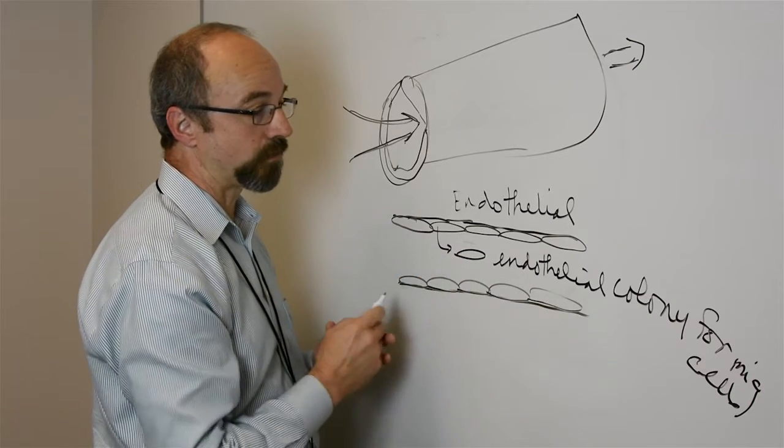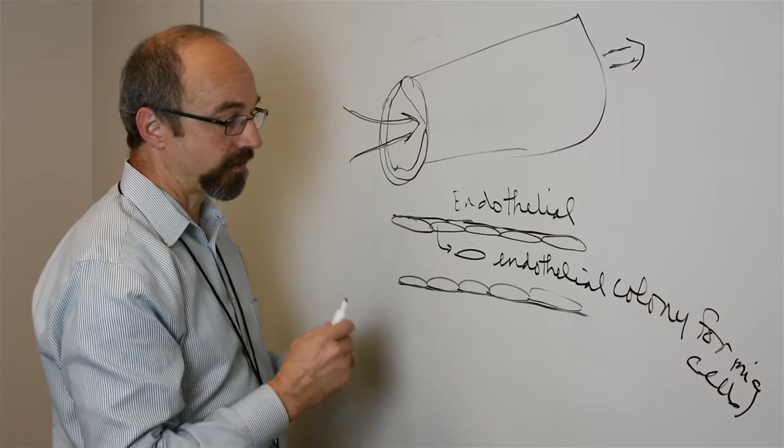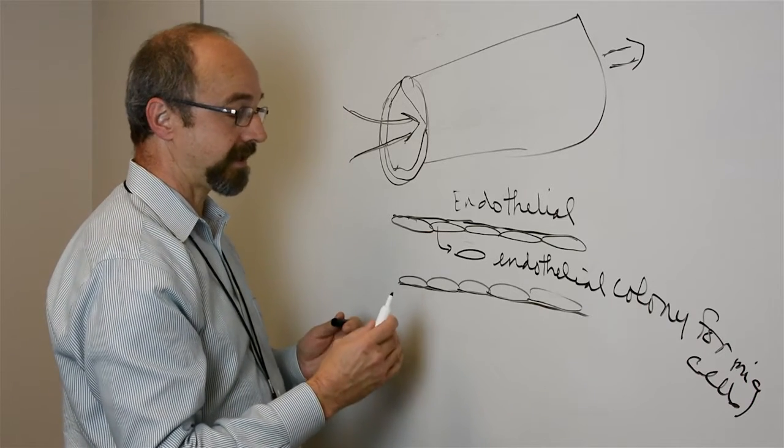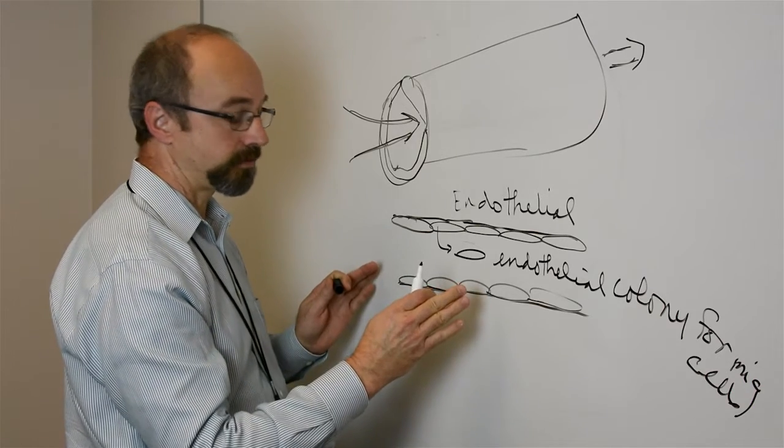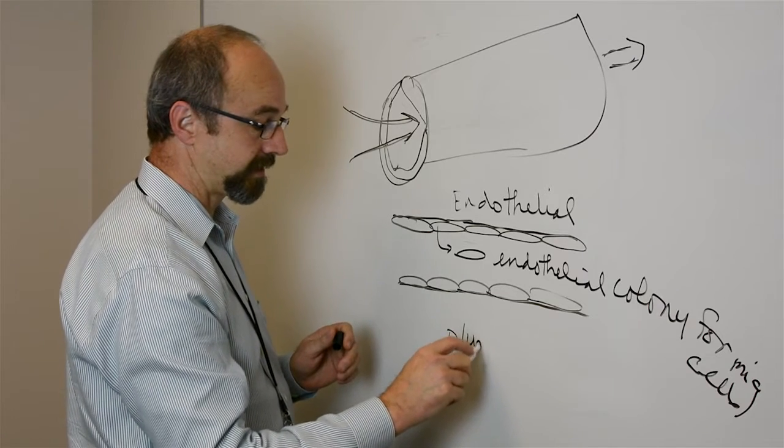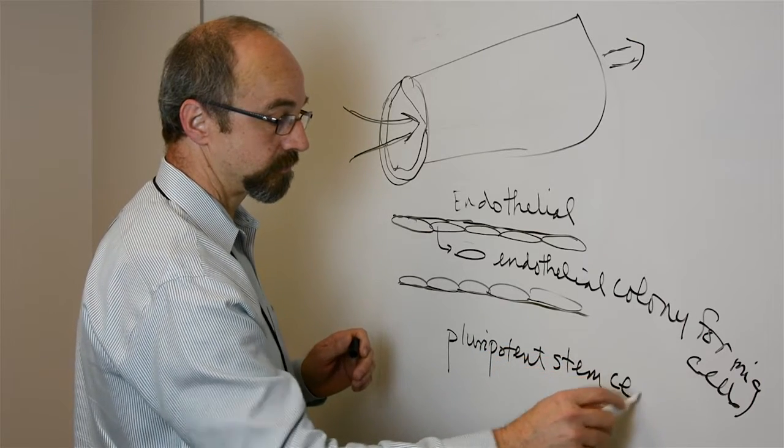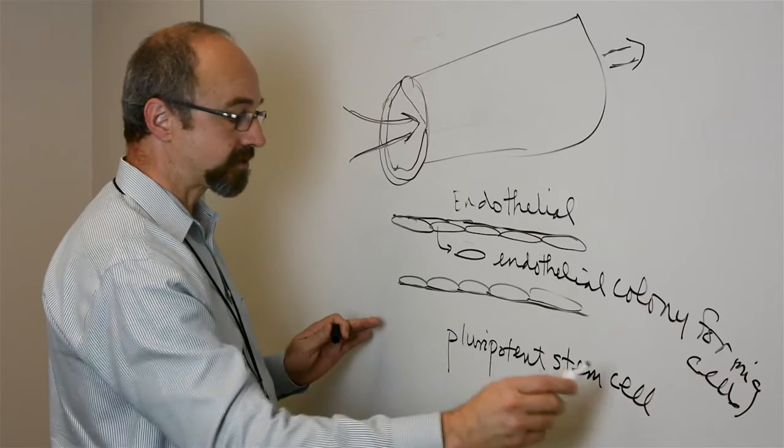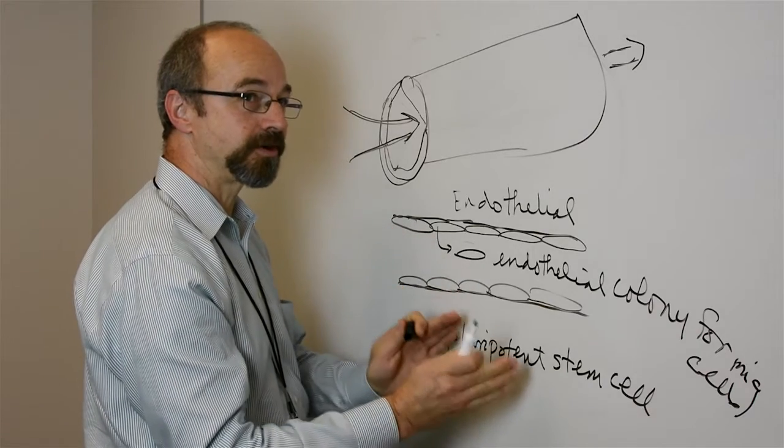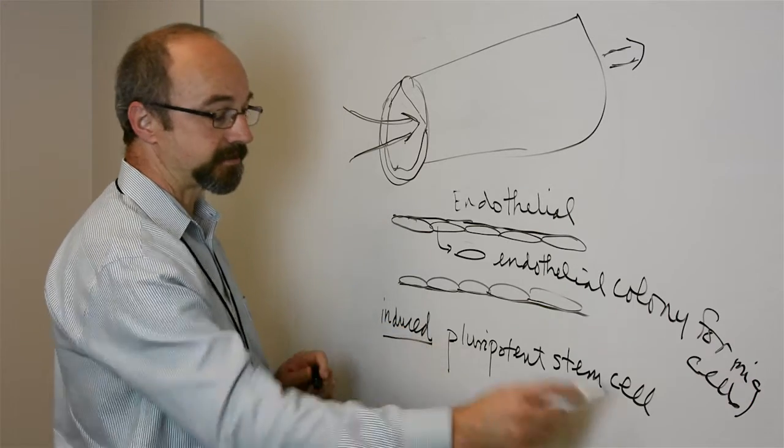That took us into very modern stem cell biology in a process where you can now take any cell in the human body and turn that cell into a pluripotent stem cell by a process called reprogramming. We're actually able to induce one cell type to turn into another. So we call these induced pluripotent stem cells.